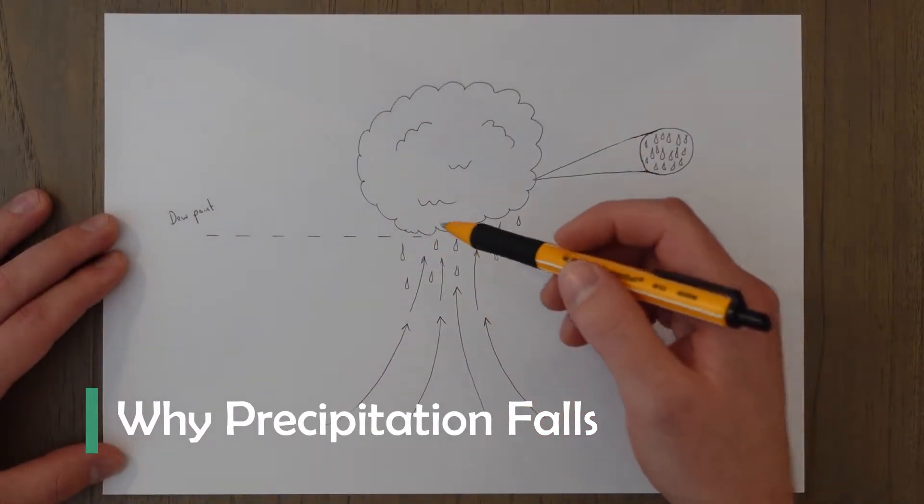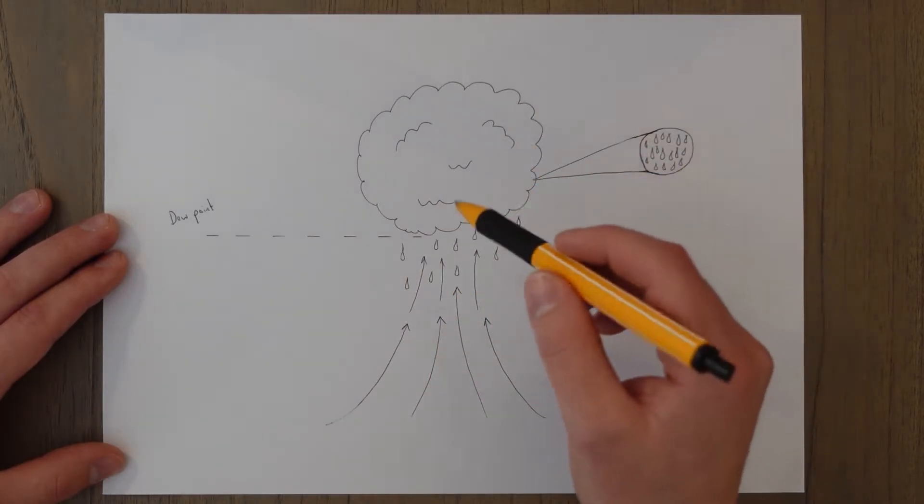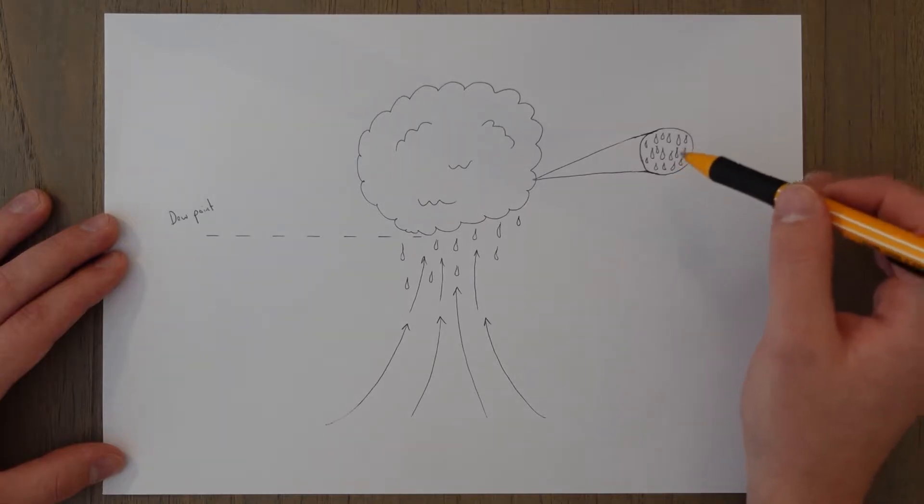Precipitation is formed when rising air cools down to below the dew point and the air becomes fully saturated and clouds are formed. It's basically suspended precipitation at this point.